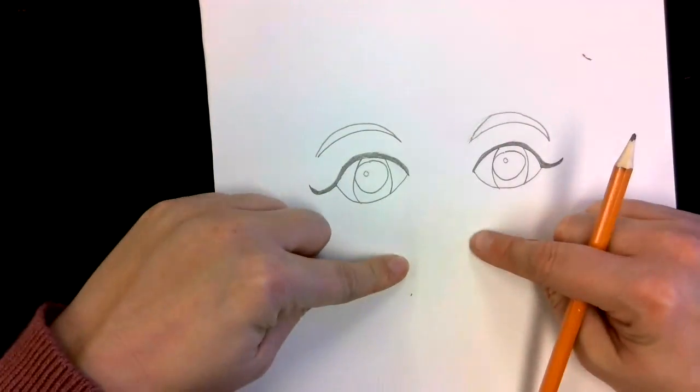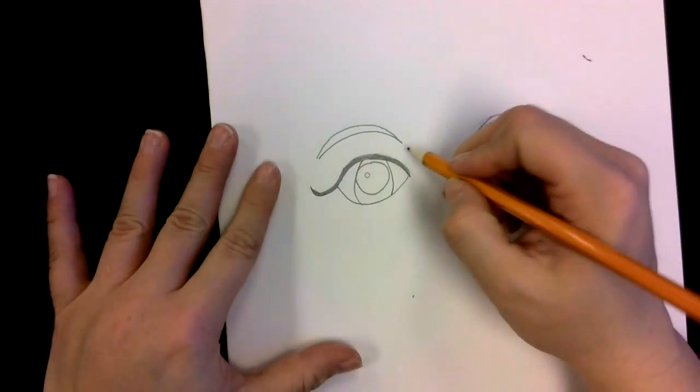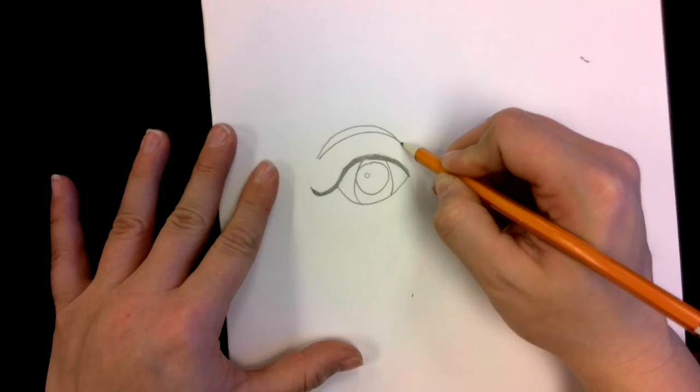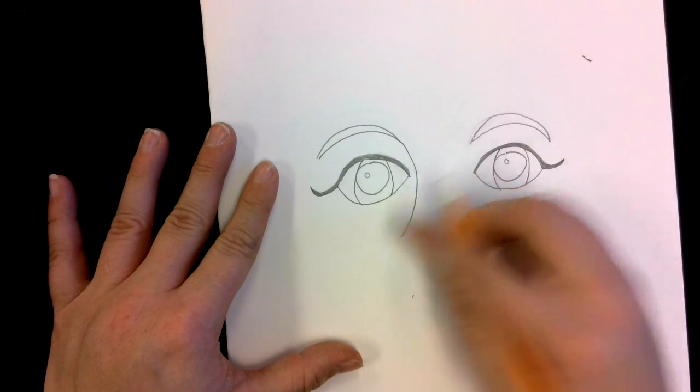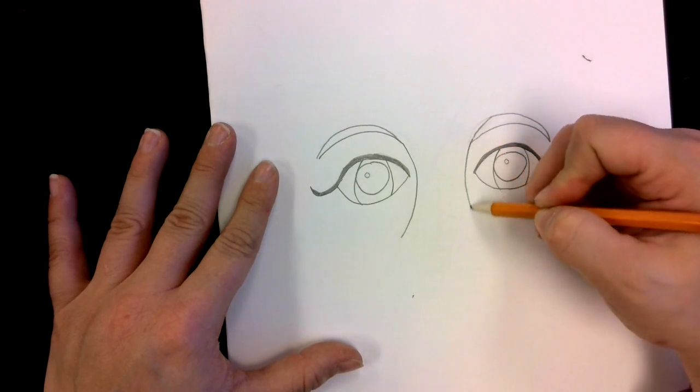Now I'm going to do the bridge of my nose, which are the sides of your nose. I'm going to start at this end of the eyebrow and curve down around the eye. I'm going to do the same thing on the other side.